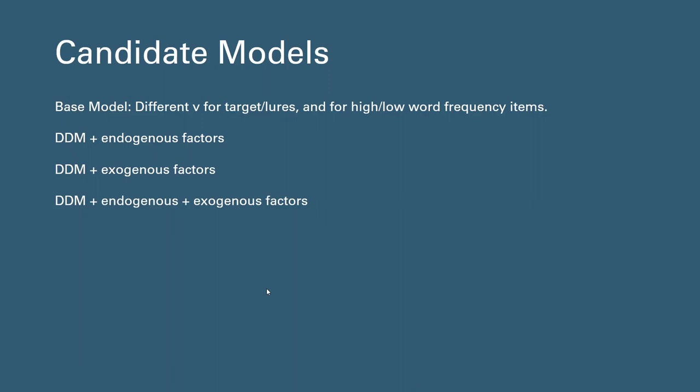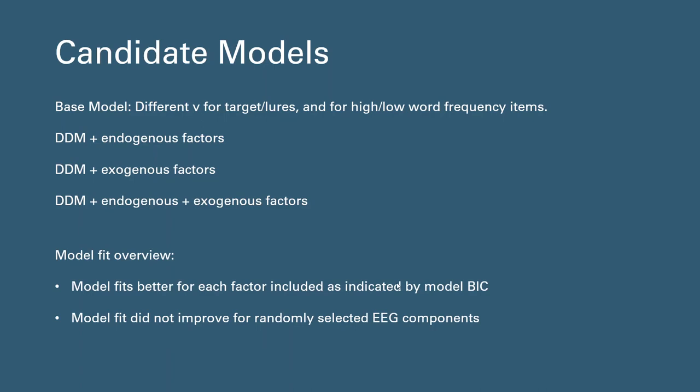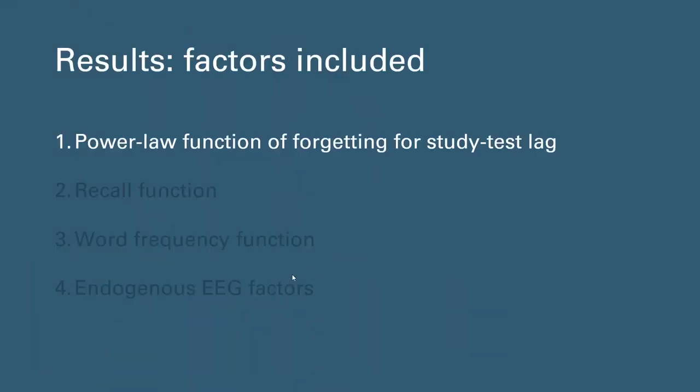To give you an overview of the model fit before going into the specifics, we found that models fit better for each factor included as indicated by the sum of the model BIC values, and the model fit did not improve for randomly selected EEG components, which suggests that we're not only just giving the model neural noise in the hope that the model figures itself out.